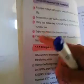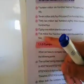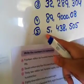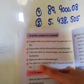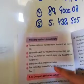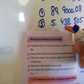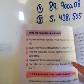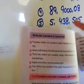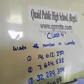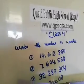Paanchwa aur last number hai: five million four hundred and thirty eight, five hundred five. Thik hai. Ab tak ki video mein itna hi aaya, agli class mein karenge. Umeed hai aapko samajh aaya hoga.